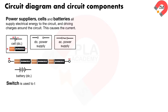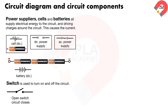A switch is used to turn on and off the circuit. The first symbol shown is for an open switch, which means that the circuit is open. The second symbol shown is for a closed switch, which means that the circuit is closed.